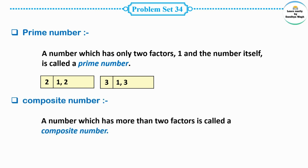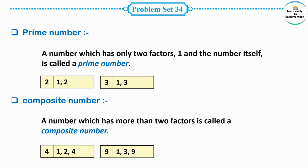A number which has more than two factors is called a composite number. Numbers that have more than two factors are called composite numbers. For example, four has three factors: first factor 1, second factor 2, and third factor 4. So four is a composite number. Similarly, number nine has three factors: 1, 3, and 9 — so nine is also a composite number.